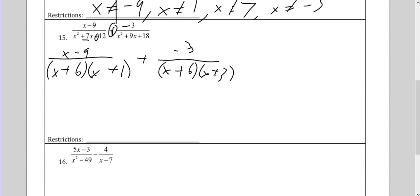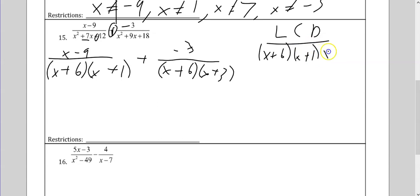On the bottom right, two numbers that multiply to give me 18 that add to 9 — that's 6 and 3, both positive. Now, this is where the practice with the LCD comes in. When you're adding or subtracting fractions, just like 1 half and 2 thirds, you need a common denominator. So I need x plus 4, x plus 3 — they both have x plus 3 already, and then x plus 6. That's my common denominator.